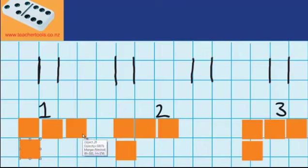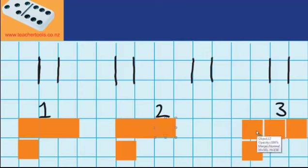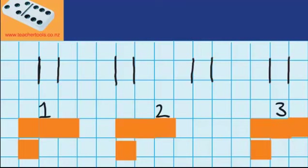So you can see that everyone has got four thirds. Or if I put them a little bit more neatly together, you can see that it's the same as one whole and one third. And I can record that like this: one whole and one third.